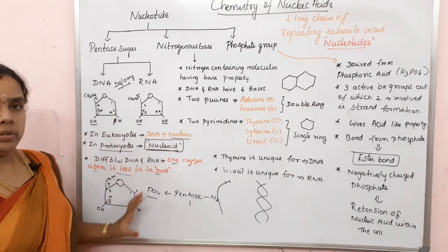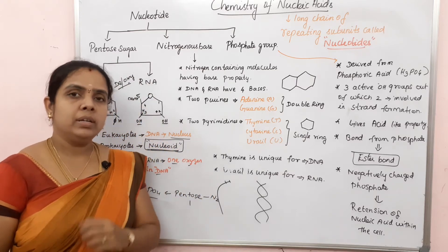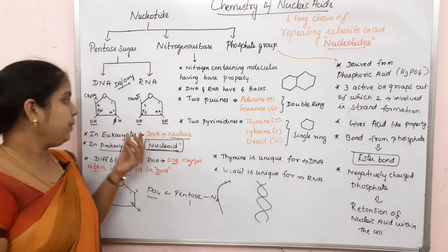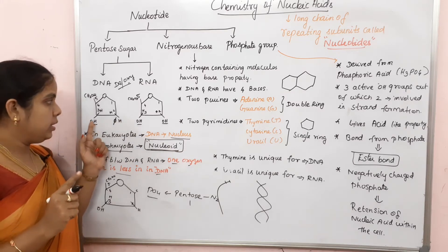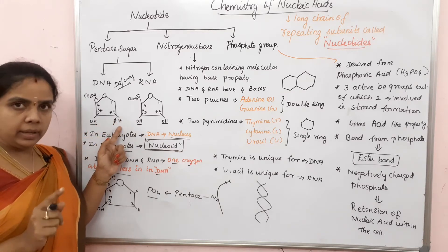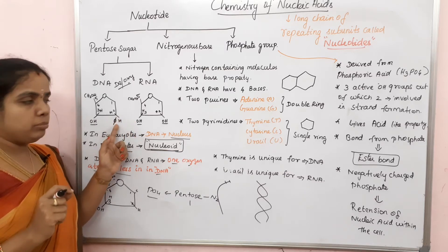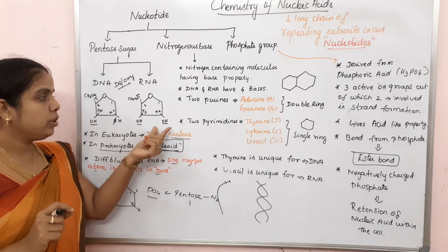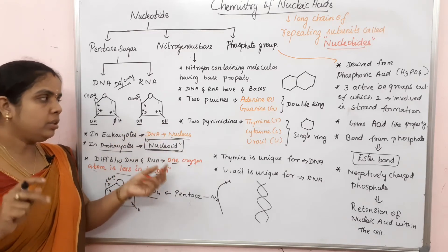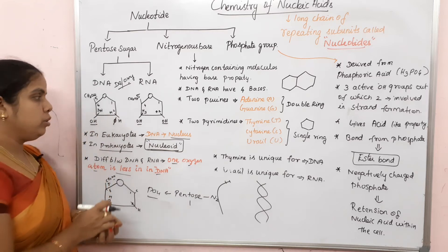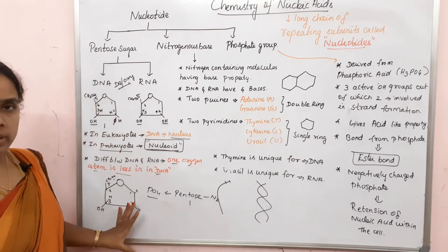Pentosugar is a 5-carbon sugar molecule. In DNA, carbon number 3 has an OH group, and carbon number 2 has a hydrogen atom. In RNA, carbon numbers 2 and 3 both have hydroxyl groups - so RNA has two functional groups, while DNA has only one functional group.